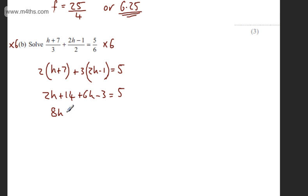So collecting like terms, I've got 2h and 6h, that's 8h. We've got 14 minus 3, which is going to give me plus 11, and that is equal to 5. Subtracting 11 from both sides of the equation, 8h will be equal to minus 6.